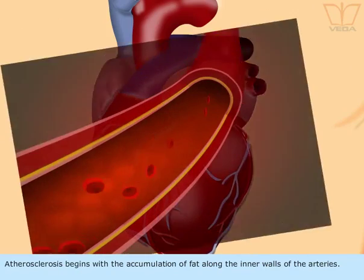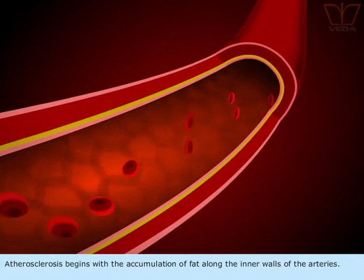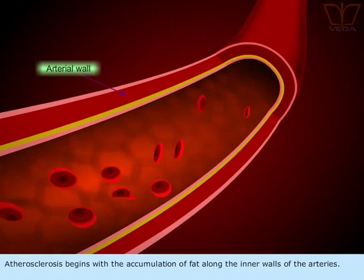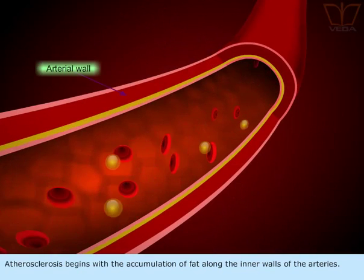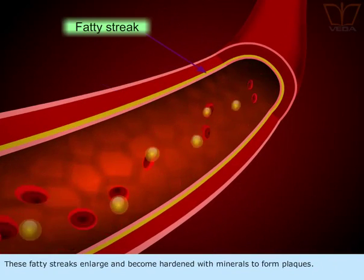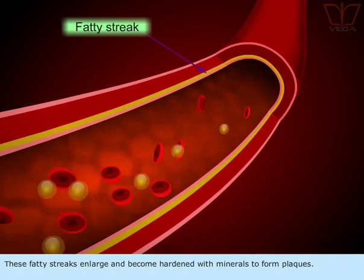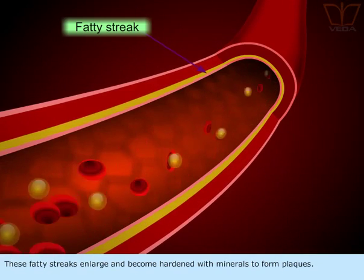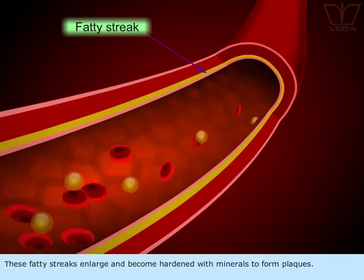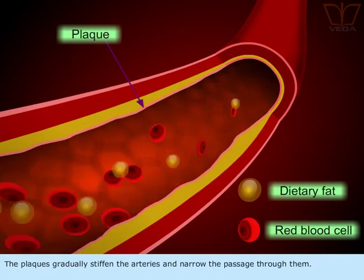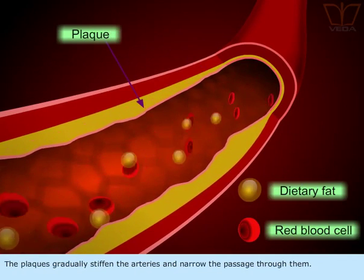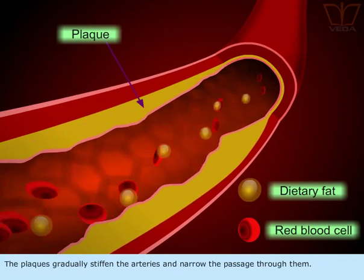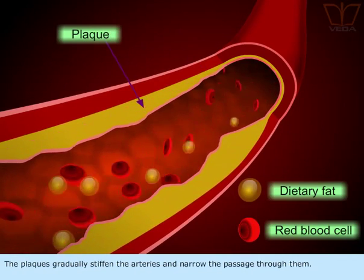Atherosclerosis begins with the accumulation of fat along the inner walls of the arteries. These fatty streaks enlarge and become hardened with minerals to form plugs. The plugs gradually stiffen the arteries and narrow the passage through them.